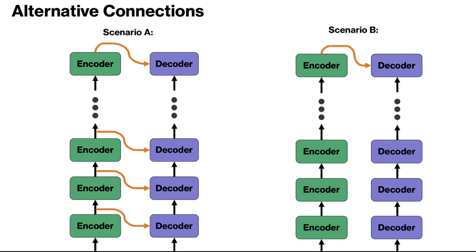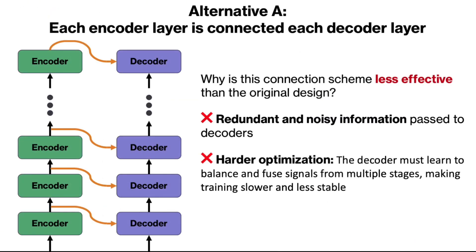Now we want to consider alternative connections and see why they are not as effective as the original design. Two alternatives are displayed here. In alternative A on the left, we connect each encoder layer to each decoder layer. At first sight this may seem to be a good idea, but we'll see why this is not a good design. In alternative B on the right, we only connect the final output of the encoder to only the first or the last decoder, and we'll see why scenario B is also not as effective as the original design.